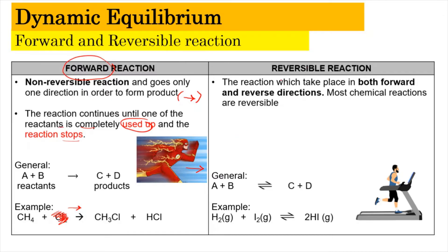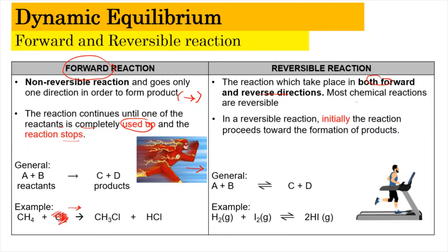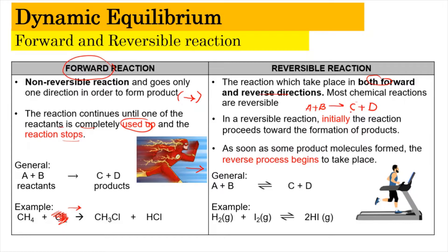For the reversible reaction, the reaction will take place in both the forward and reverse direction, and most chemical reactions are indeed reversible. Initially the reaction will proceed towards the formation of the product — let's say we have a lot of reactant A and B, which will move towards producing products C and D. But as time goes by, the product can be turned back into reactants A and B. The example for this reversible reaction is the reaction of hydrogen gas and iodine to produce 2 mol of hydrogen iodide.